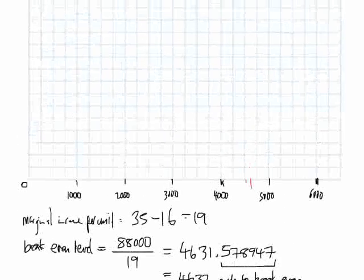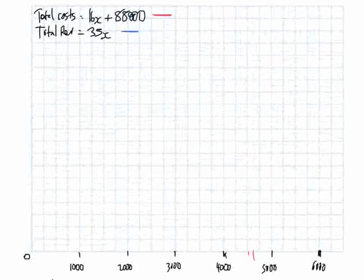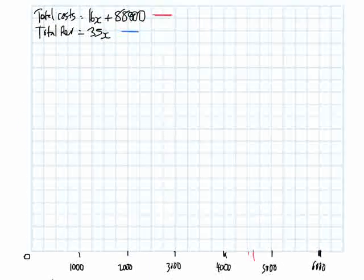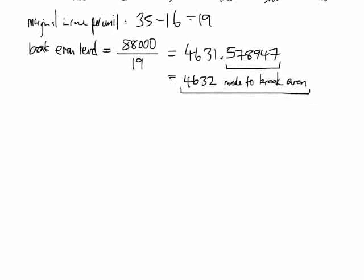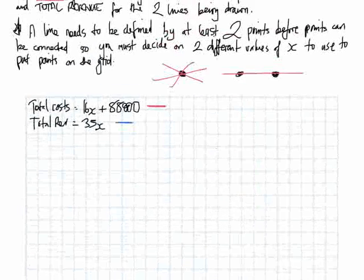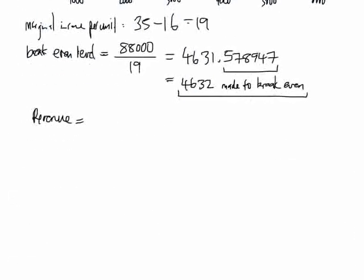Now how do we know how tall the graph needs to be? We know the total costs line will cross the y-axis at 88,000. We need to work out how tall it needs to be. We know break-even is at 4,632, so let's plug that into the revenue formula. Revenue equals 35 times x, and we know the lines cross at 4,632, so we substitute that to find how high the crossover point will be on the y-axis.